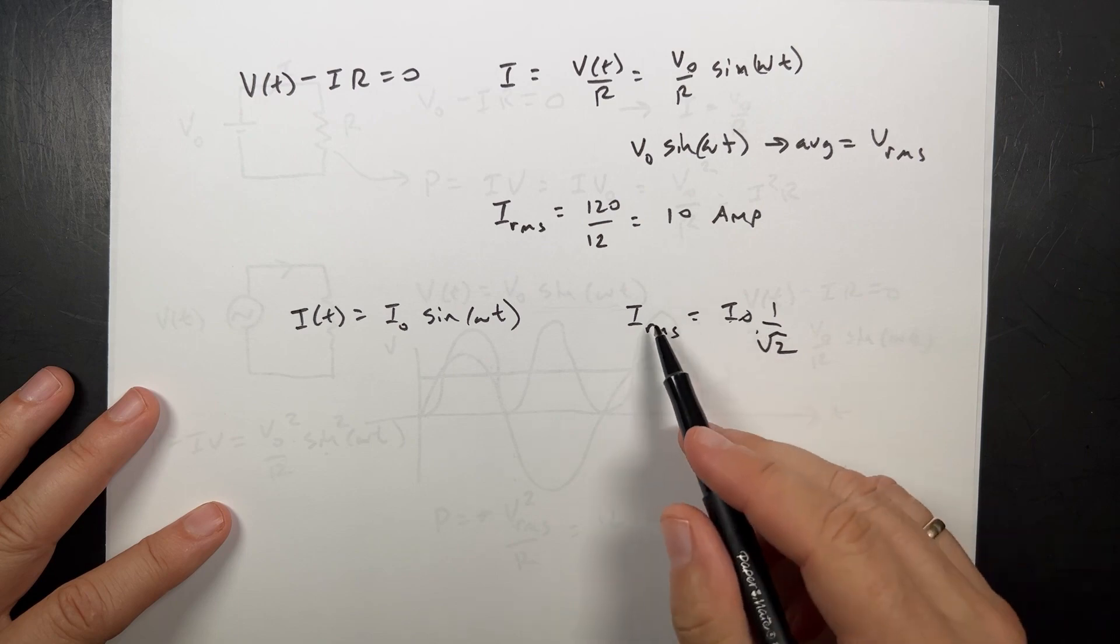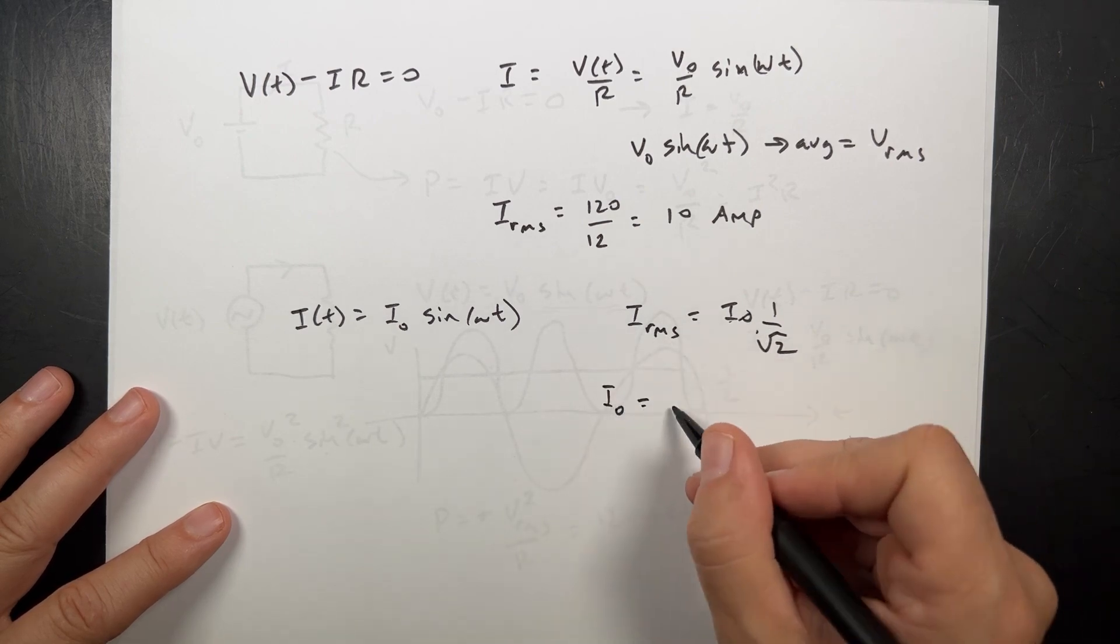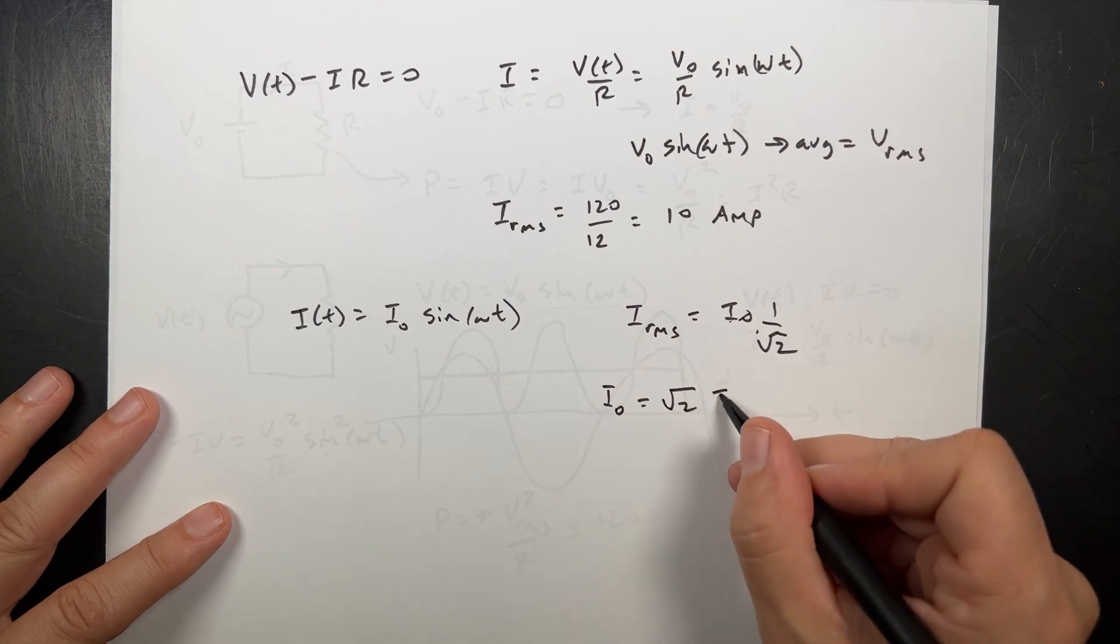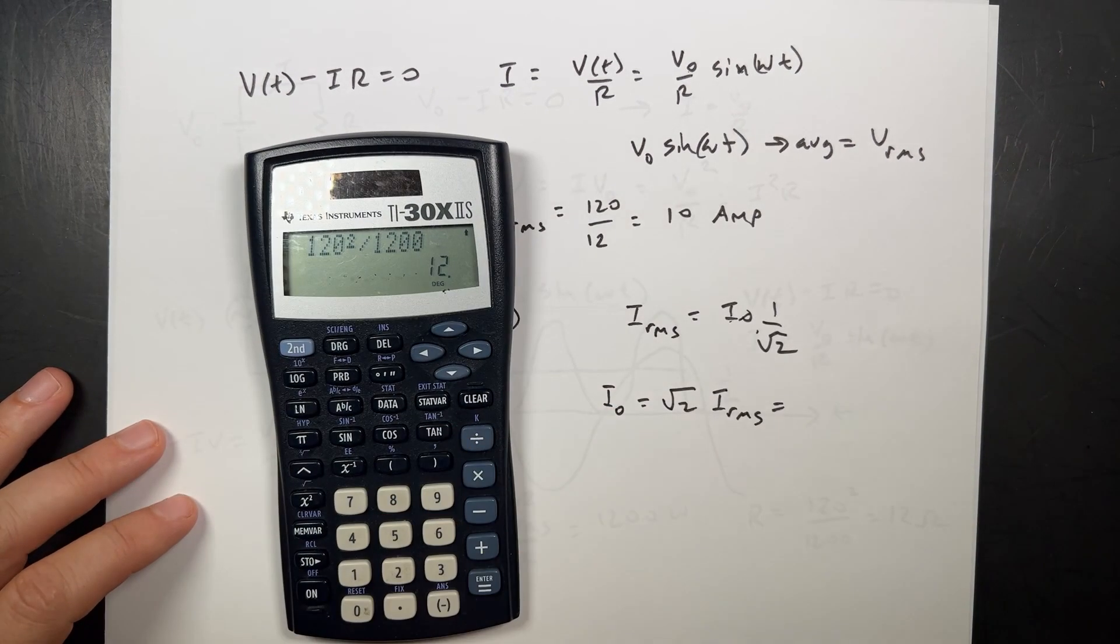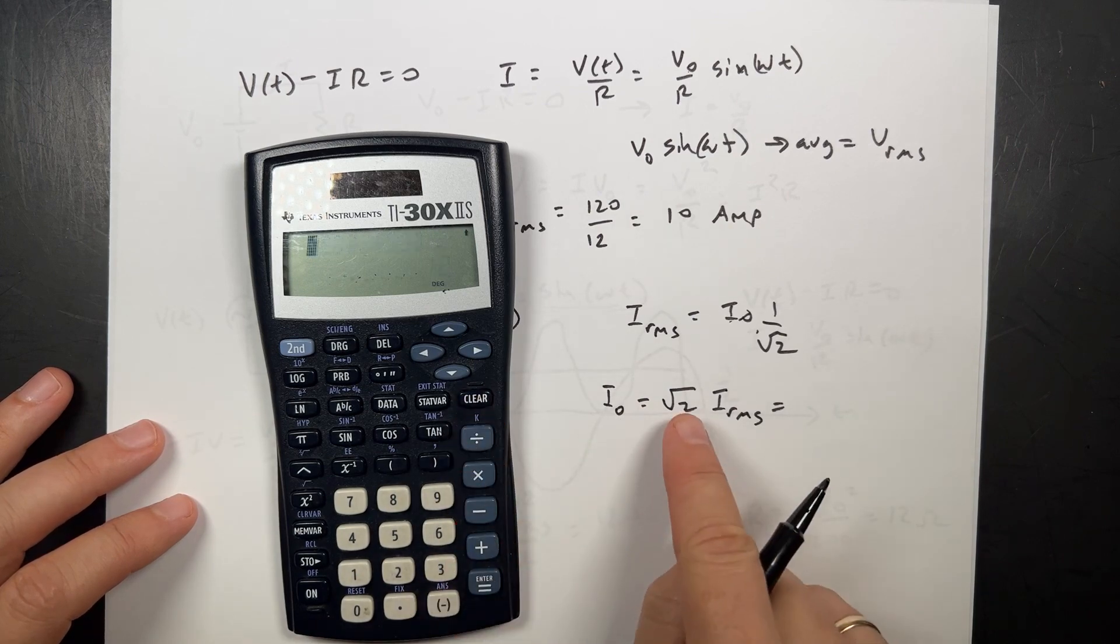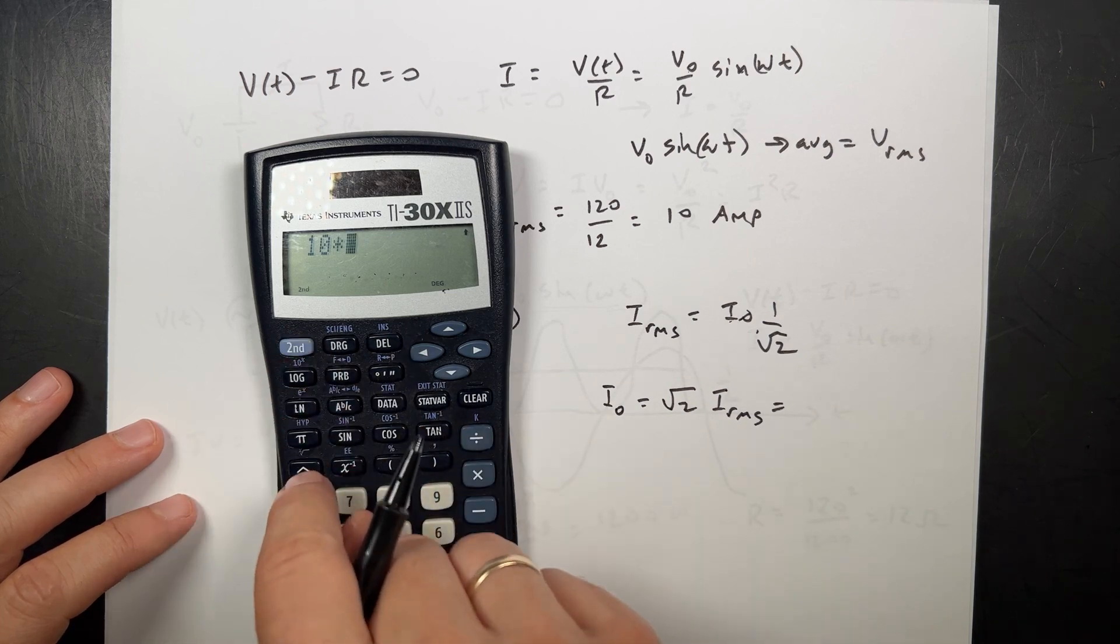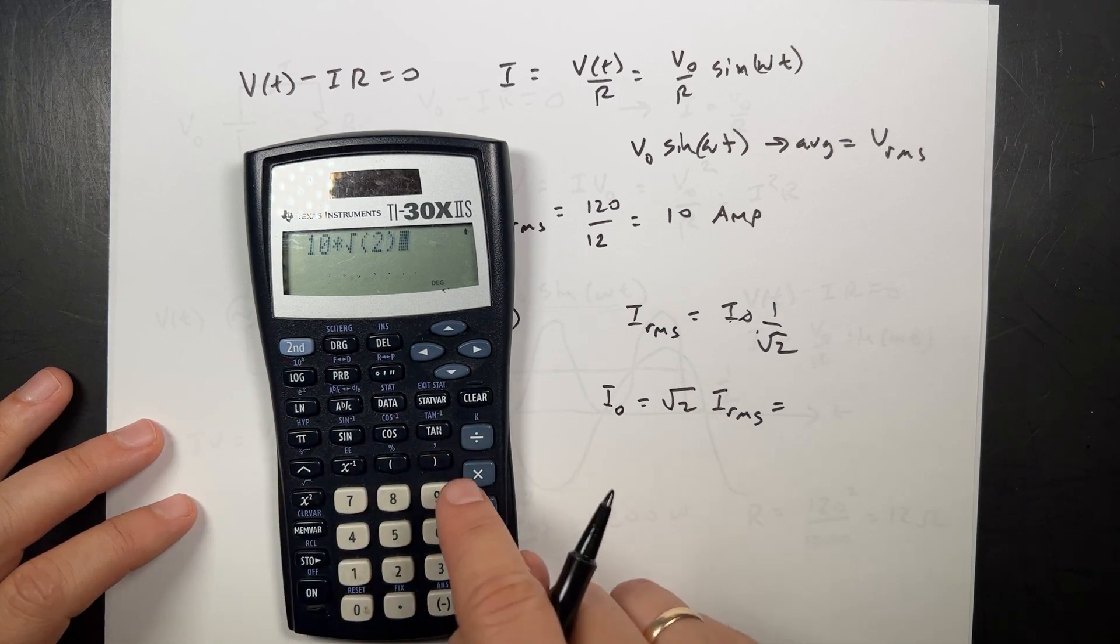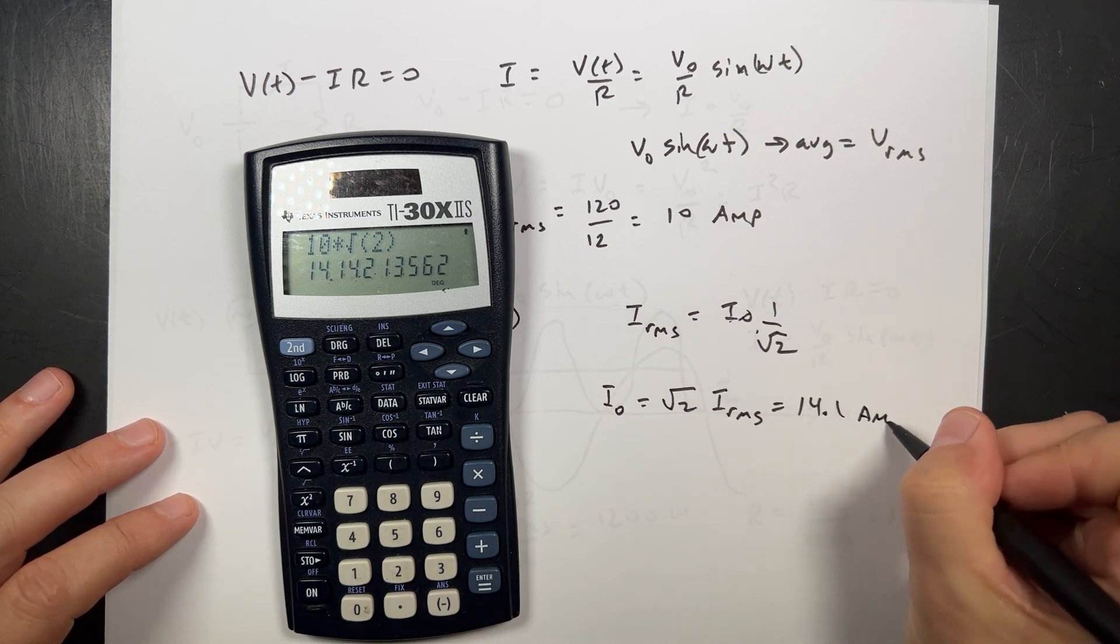So now I want to find that. I just need to multiply I0, which is the max. It's going to be the square root of 2 times I RMS. And that is, get out the handy-dandy calculator. I know that's 10, so it's going to be 10 times the square root of 2. And I get 14.1 amps.